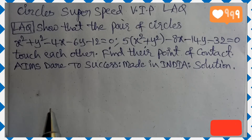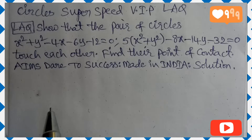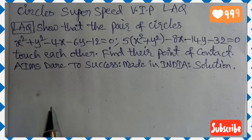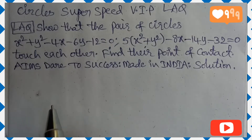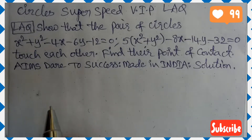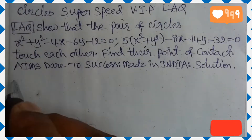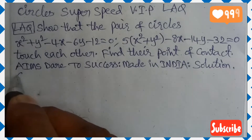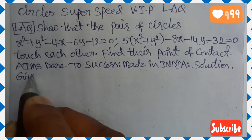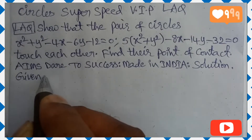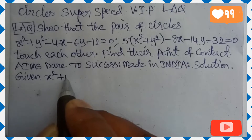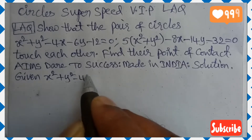Show that the pair of circles x² + y² − 4x − 6y − 12 = 0 and 5(x² + y²) − 8x − 14y − 32 = 0 touch each other. Find their point of contact. AIM's Dare to Success — Made in India. Solution.